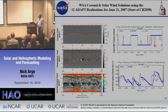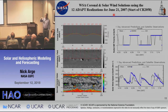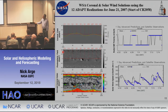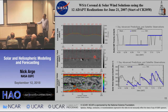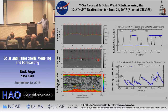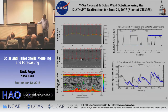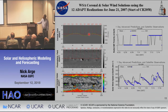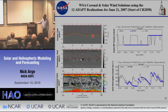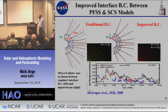ADAPT produces 12 realizations, and here is the map from June 21st fed into the WSA model, giving the field at 21.5 solar radii with coronal holes identified. There doesn't seem to be much difference overall, but the current sheet is wagging around and the connectivity is actually changing quite a bit — in one case you're cutting through one polarity, in another you're above the current sheet, in another you're below. That makes a big impact.